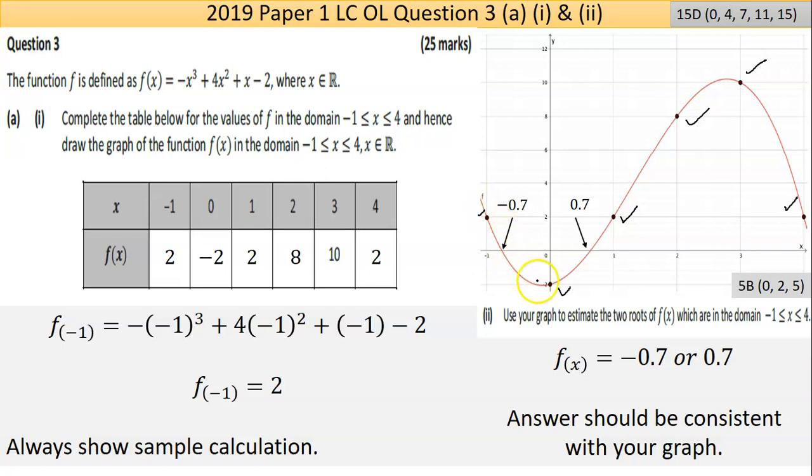Then with a smooth continuous line, I'm going to join those points together. Don't want to draw straight lines. That's a polynomial. By definition, one of those properties is that it has a smooth continuous line. Job done. 15 marks.